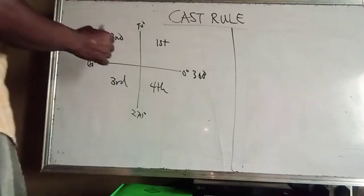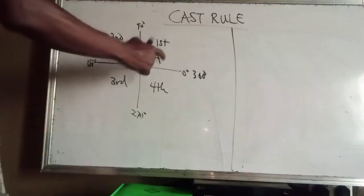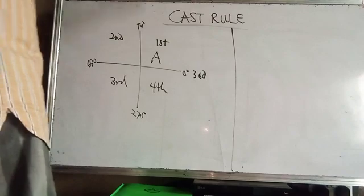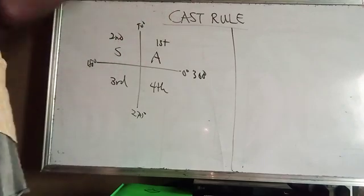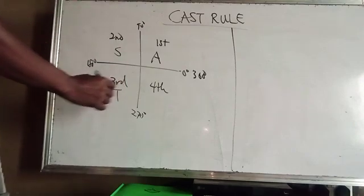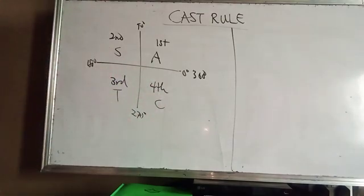So now in this first quadrant we have A, meaning that all of them are positive. All trigonometric ratios there are positive. We have S, sine is the only positive trigonometric there. We have T in the third quadrant and we have C cosine in the fourth quadrant. Now what does all this mean?